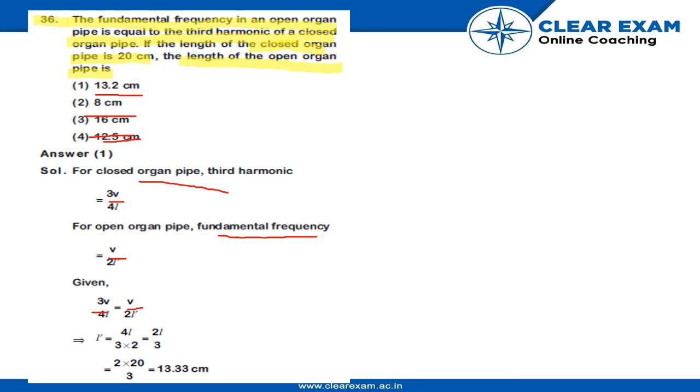Therefore, l' will be equal to 4l divided by 3 times 2, which simplifies to 2l/3. Since l has been given to us as 20 centimeters, l' will be 2 times 20 divided by 3, which equals 13.33 centimeters.